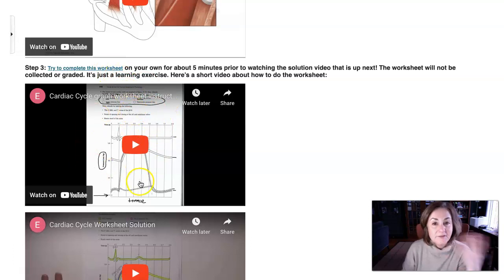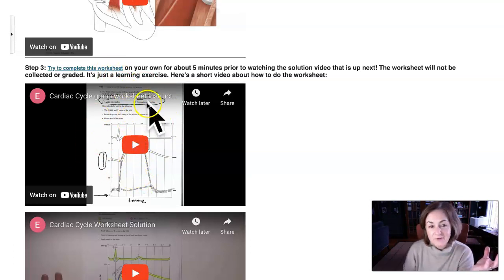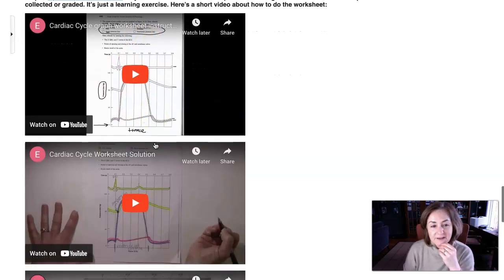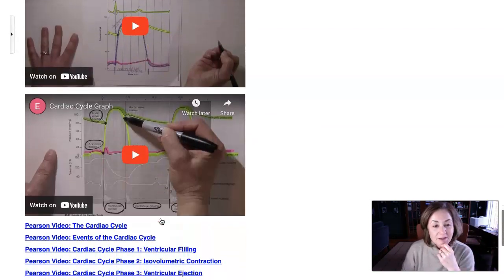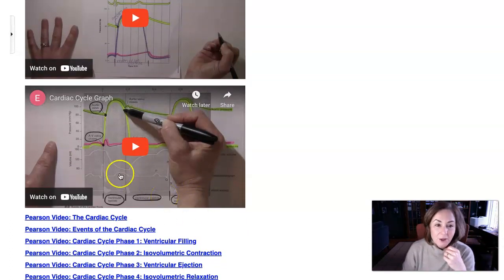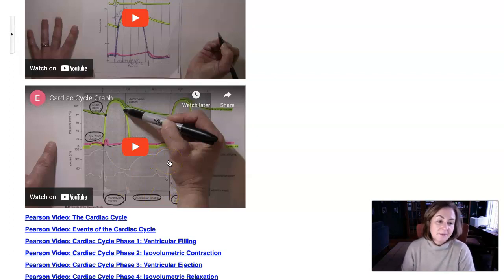But in this video, I give the assignment. It's just a short assignment to try to figure out some things. We do this in class. And then I provide the solution. So you can look at the solution afterwards. In addition, I also take a look at this graph, which is the graph of the cardiac cycle. And so not only should you know a descriptive kind of account of the cardiac cycle, but you should definitely be able to interpret this graph.